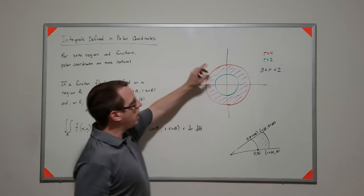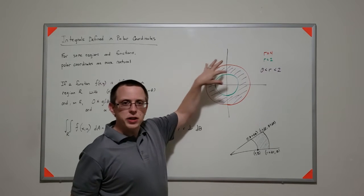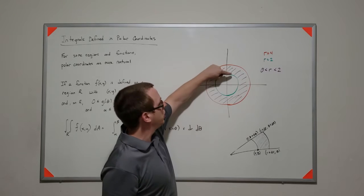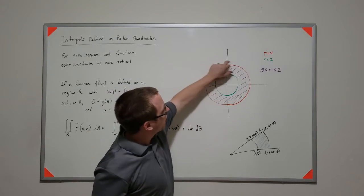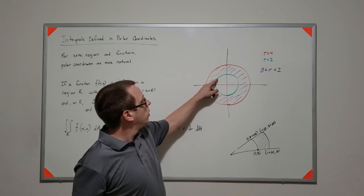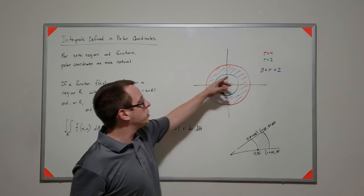So take a look over here. If I have the region that I'm integrating over, not necessarily the function I'm integrating, but just the region, this is what's called an annulus, goes here from some radius of 2 to some radius of 4.